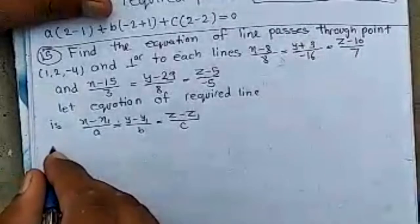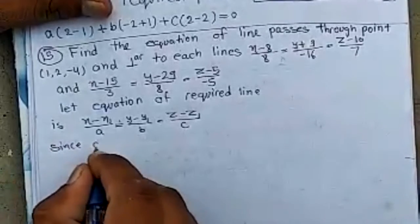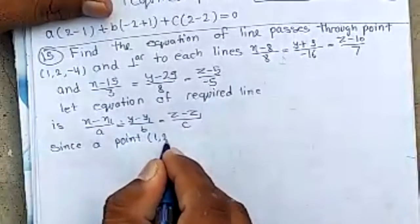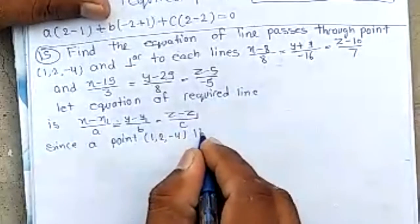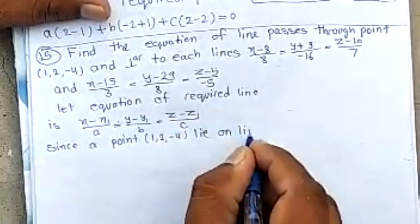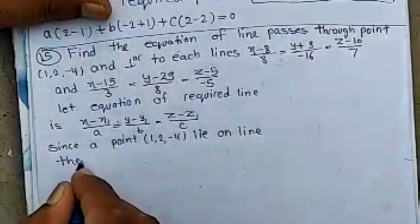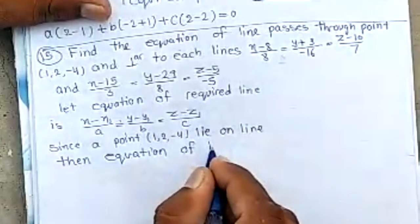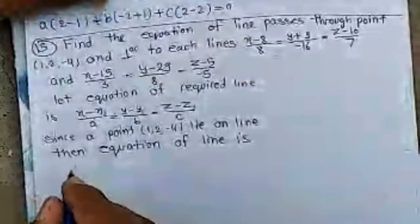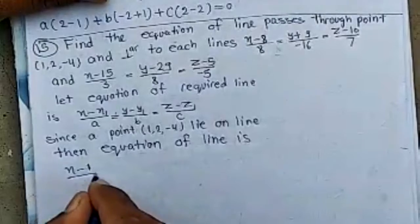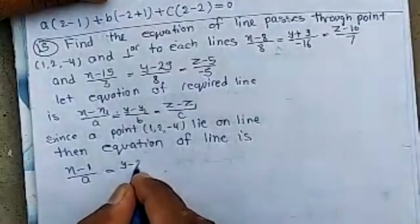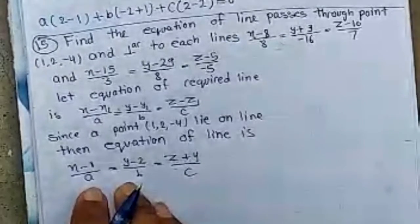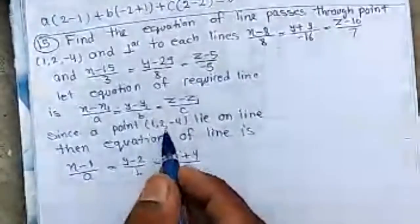Since a point lies on line, then equation of line is x minus 1 by A, y minus 2 by B and z plus 4 by C, where x1, y1, z1 is 1, 2, 4.